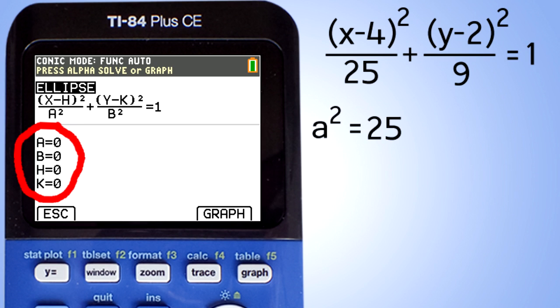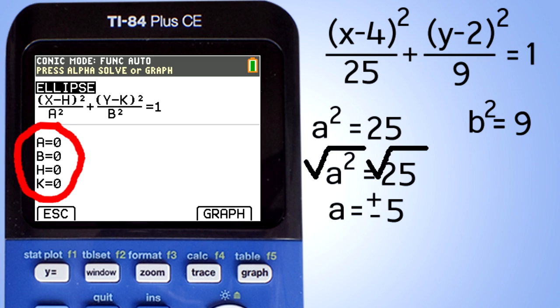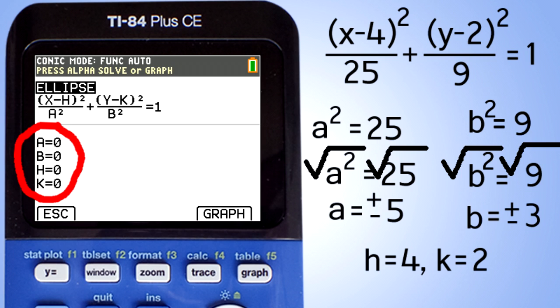Thus A squared equals 25. Take the square root of each side. A equals plus or minus 5. B squared equals 9. Take the square root of each side. B equals plus or minus 3. H equals 4 and K equals 2.